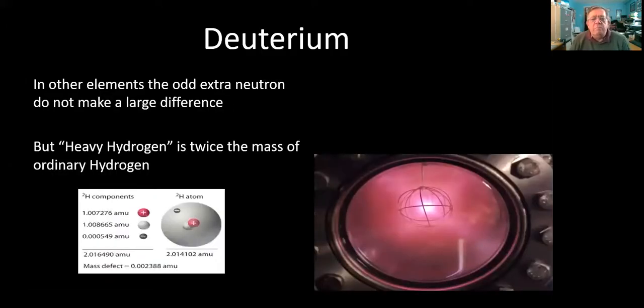Now, deuterium, we call it by a special name rather than calling it hydrogen-2, because really it's sufficiently different that it does make quite a bit of difference to its behavior as an element in its own right. That doubling of the mass is the most significant change between two isotopes of any two elements.